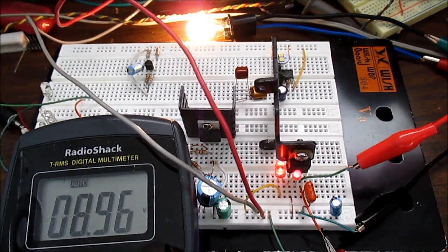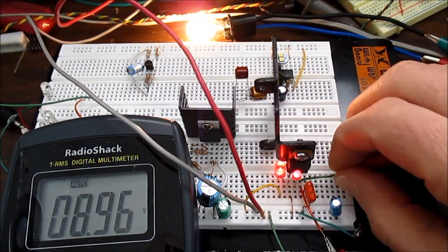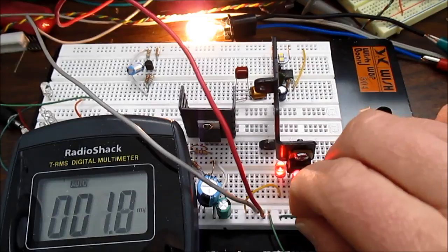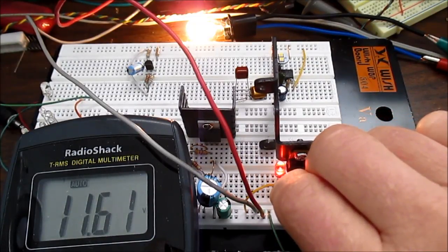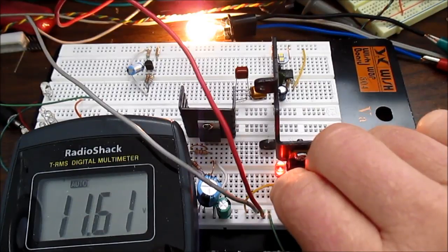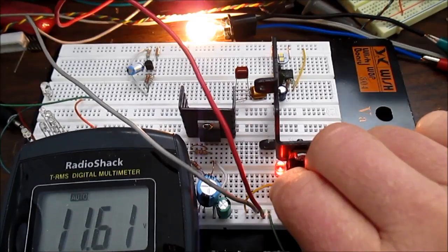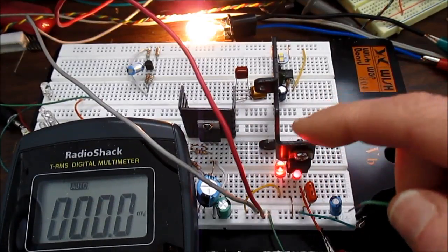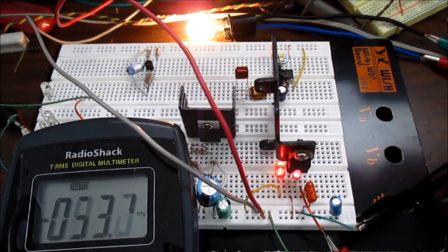And I'll go up until the point where it stops changing. Right around there it seems to stop. So let me measure the input. 11.6. So there's about 2 and a half volts. Like I said, it'd be around that level before the regulator stops regulating.